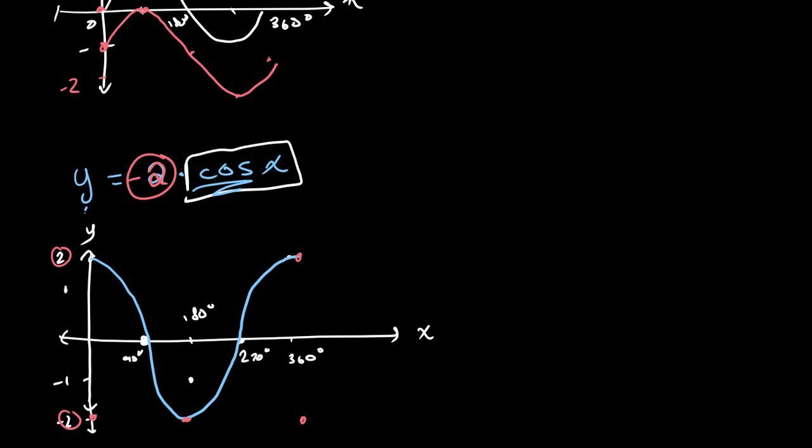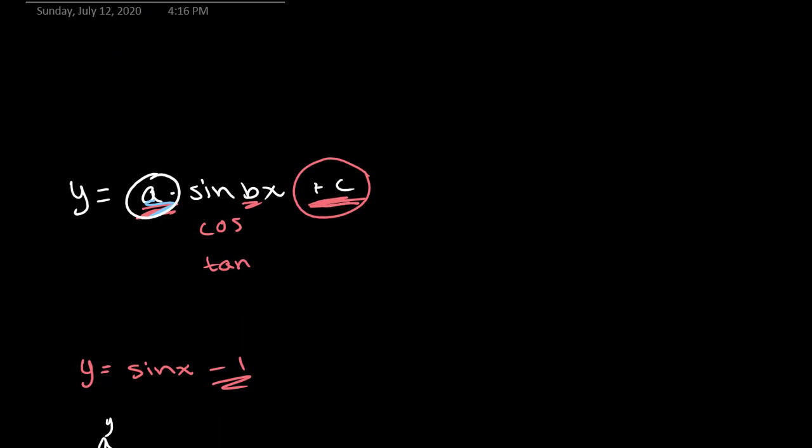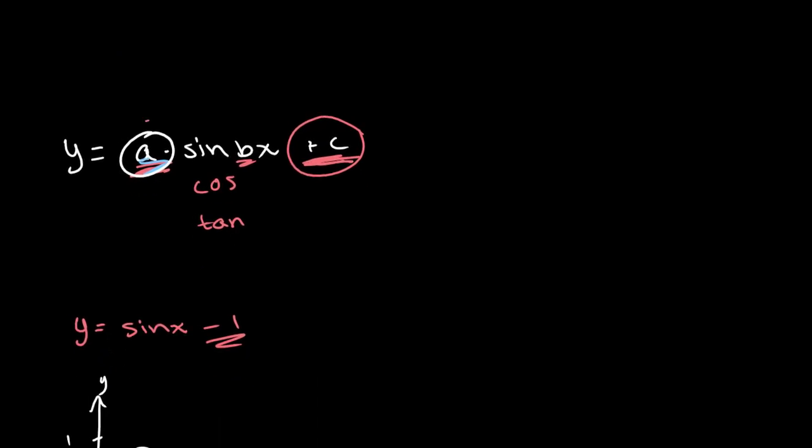And instead of negative 2 over here, we will have positive 2. And zeros will stay the same. So that will look like this, and like that. So the coefficient a essentially stretches it, and when it's negative, it flips it. So let's actually write this up here. A stretches and flips. This essentially translates our graph. So basically, this means that it moves it up and down.